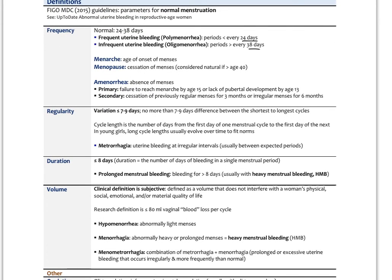Regularity is usually with a variation of less than or equal to seven to nine days — so there should be no more than a seven to nine day difference between the shortest and the longest cycles. Cycle length is the number of days from the first day of one menstrual cycle to the first day of the next. In young girls, long cycle lengths usually evolve over time to fit the norm. Metrorrhagia is uterine bleeding at irregular intervals, usually between the expected periods.